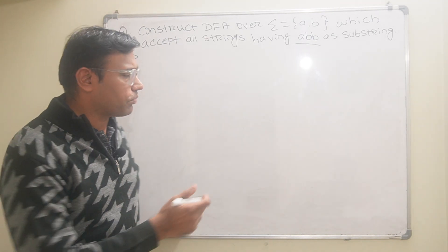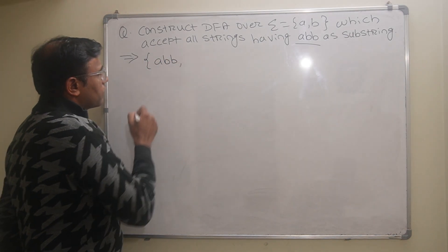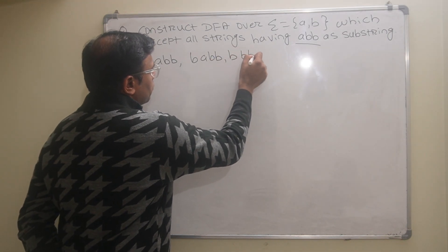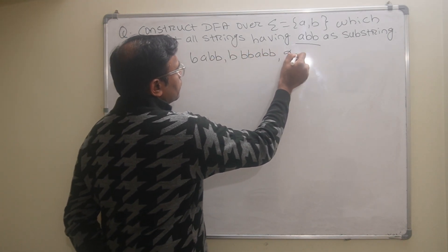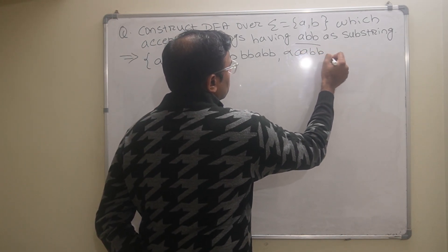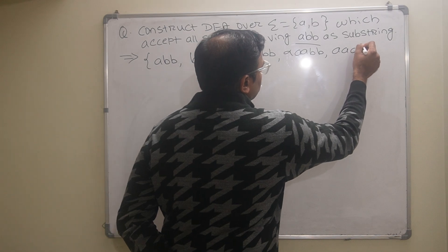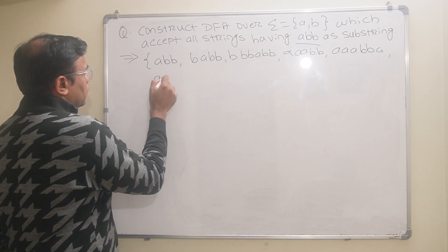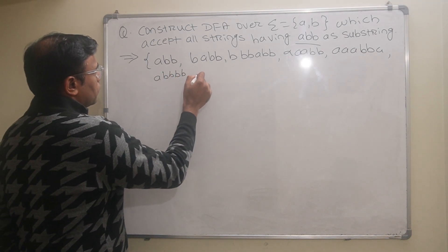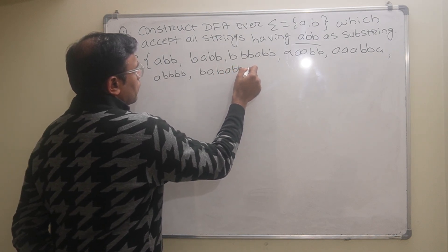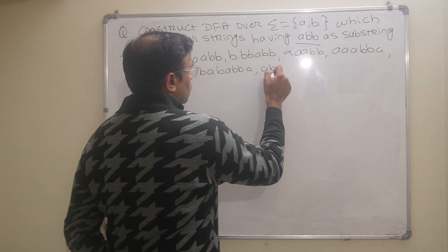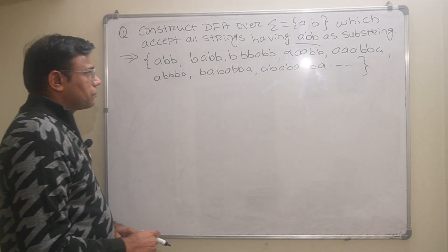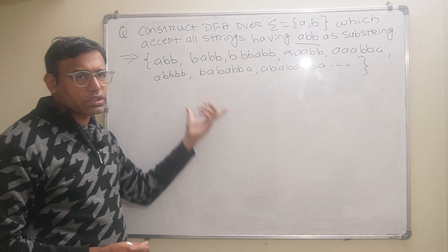The first string is ABB. The string can start with A or B, so possible strings include: BABB, BBABB, AAABB, AABB, ABBBB, BABABB, BABABBB, BBBBA, and so on. These are some of the possible strings containing ABB as a substring. Using these strings I will draw the DFA.